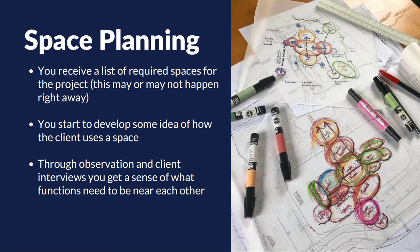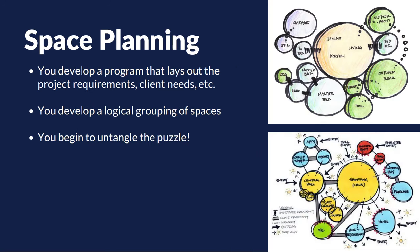So with this whole process, really where you start is you receive a list of required spaces for the project. This may or may not happen right away, but you gather these parts and pieces. Then you start to develop some idea of how the client uses the space. Through observations and additional client interviews you start to get a sense of what functions need to be near each other. At this point you begin to develop a program that lays out the project requirements, the client needs, etc. You'll then develop a logical grouping of the required spaces and begin to untangle the puzzle.